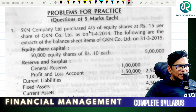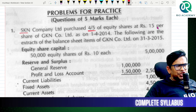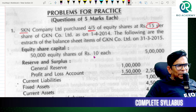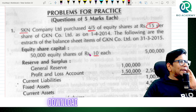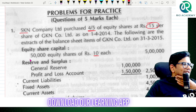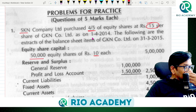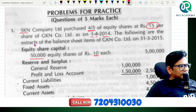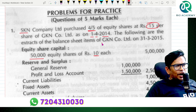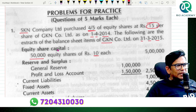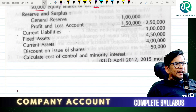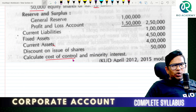SKN Company Limited purchased 4/5 of the shares at ₹15 each. What is the nominal value? This is very important. The following are the extract of the balance sheet of GKN Company as on 31st March. Equity shares, general reserves — this is the cost of control.